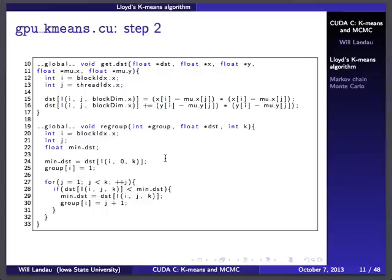If all of step two were in one kernel, I would want an explicit call to syncthreads to make sure I have all the distances computed before using them. But instead, I can simply break step two into two different kernels — that's what I did. This first kernel computes the distances.